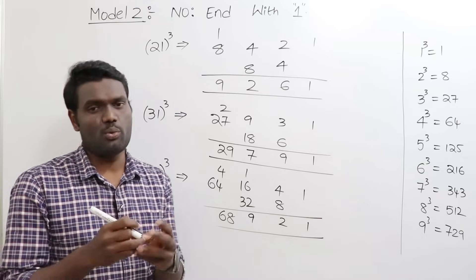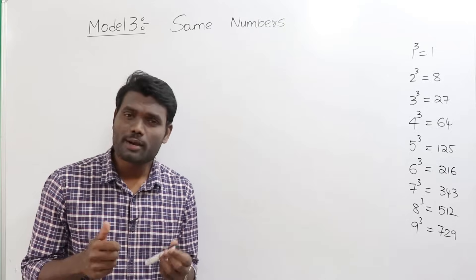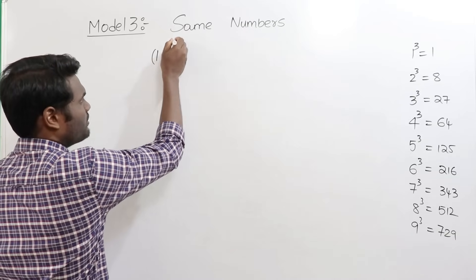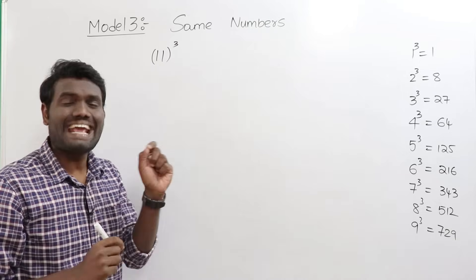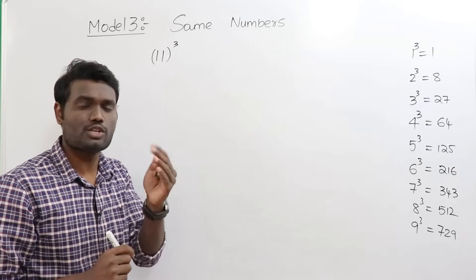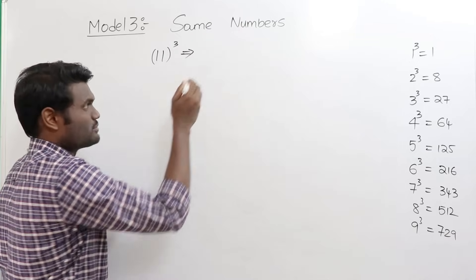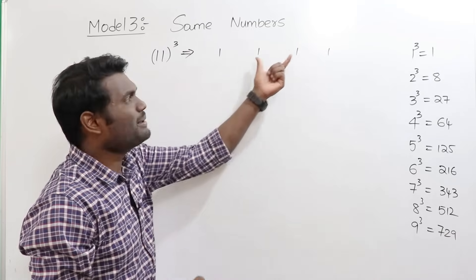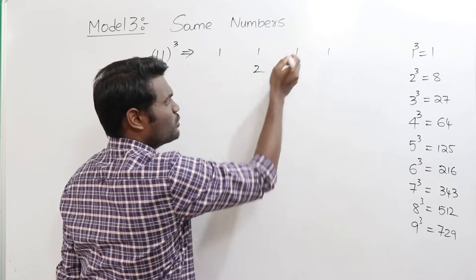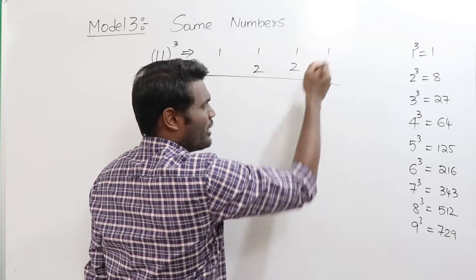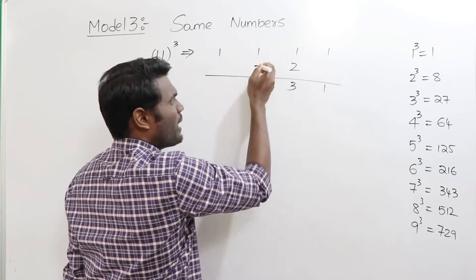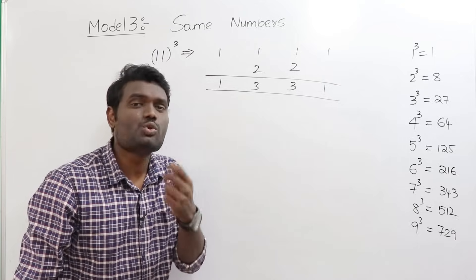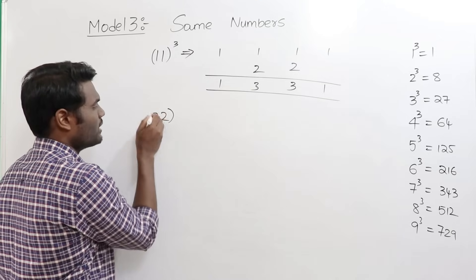Now Model 3 — same digits. Example: 11 cubed. Both digits are 1, so take one of them and cube it: 1 cubed is 1. Write that result four times: 1, 1, 1, 1. Leave first and last, double the middle: double 1 is 2, double 1 is 2. Adding: 1; 1 plus 2 is 3; 1 plus 2 is 3; 1. So 11 cubed equals 1331.